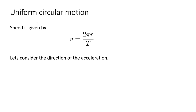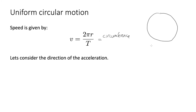The speed in uniform circular motion is given by v = 2πr/T, where 2πr is the circumference and T is the period — the time for one complete revolution.